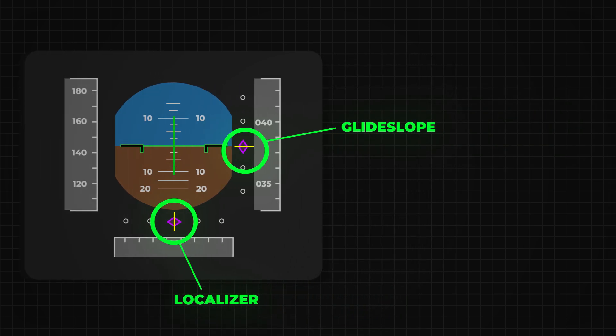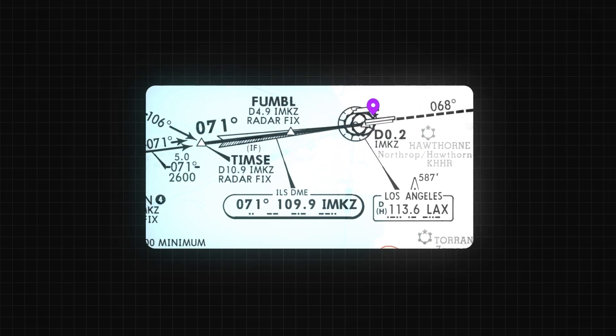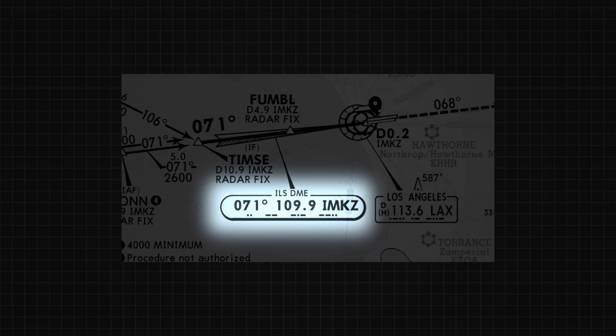To use an ILS, the aircraft must be equipped with an ILS receiver and the pilot needs to tune in the correct frequency found on the approach chart. Each ILS also transmits a unique identifier using Morse code, which helps confirm the pilot is using the correct frequency for the intended runway.